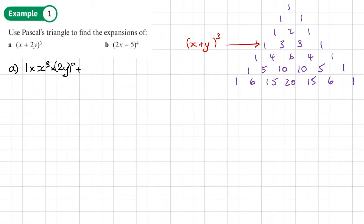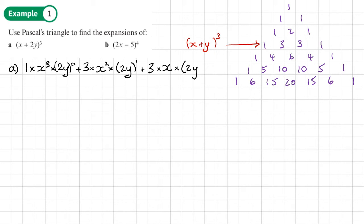The second term has a coefficient of 3 times x squared times (2y) to the power 1. The next term has coefficient 3 times x times (2y) squared. Notice it's all of (2y) to the power — the whole bracket raised to that power, not just 2 with y squared. Be careful: it's the whole of this done to a power.